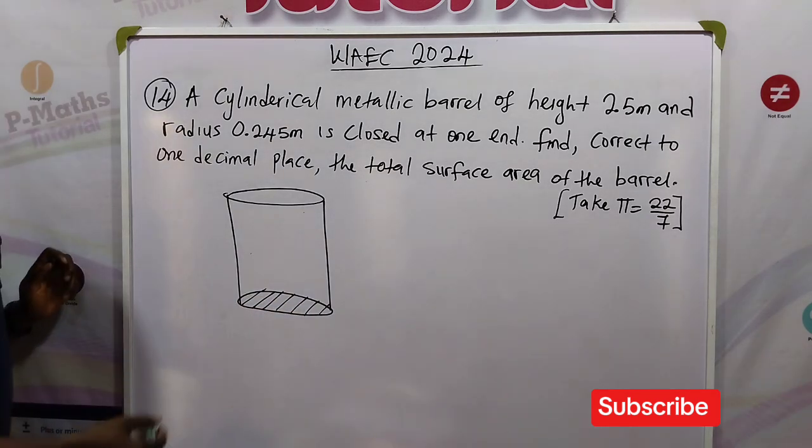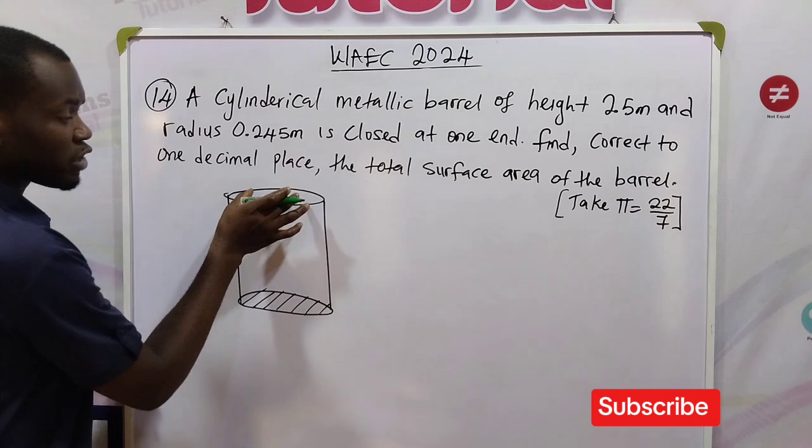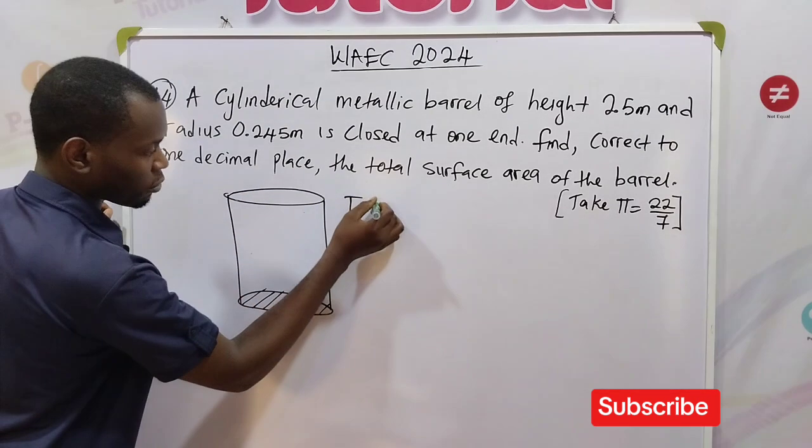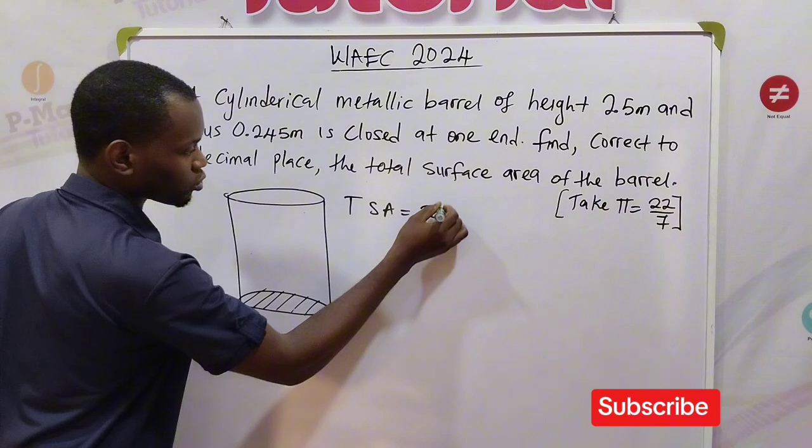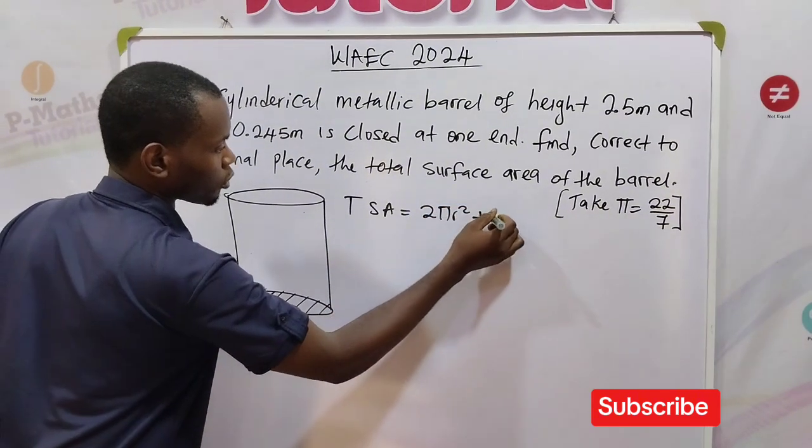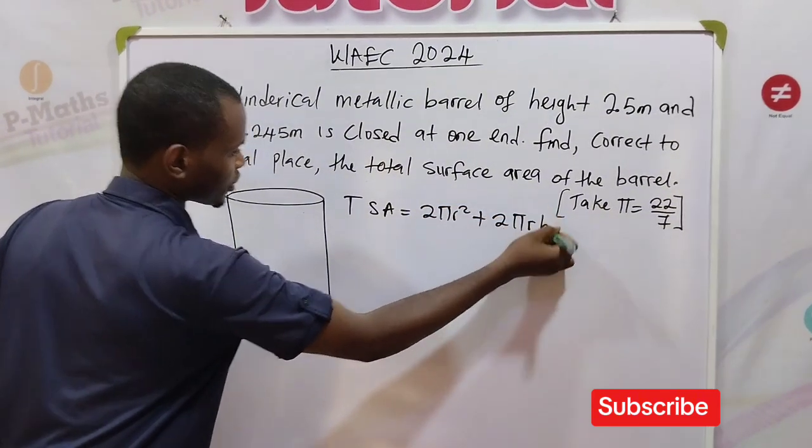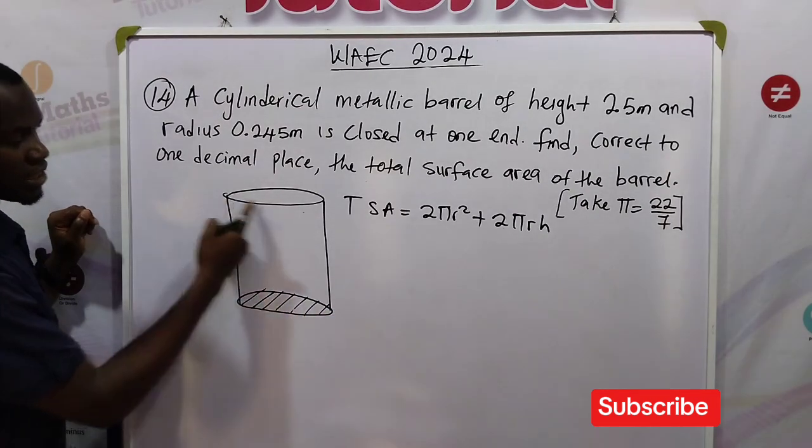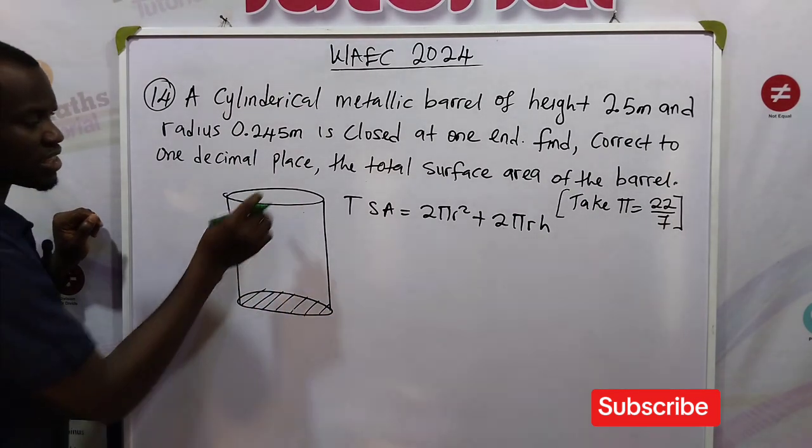We are asked to find the total surface area. If the two ends of the cylindrical barrel are closed, then we consider the formula for total surface area as 2πr² + 2πrh, because we are talking about a circular base and a circular top.